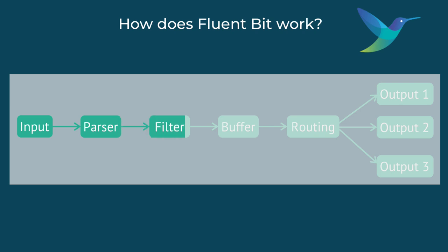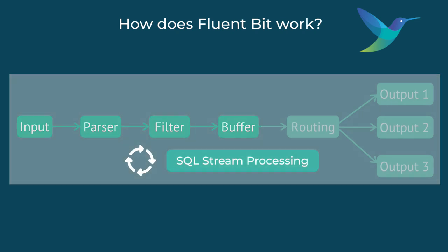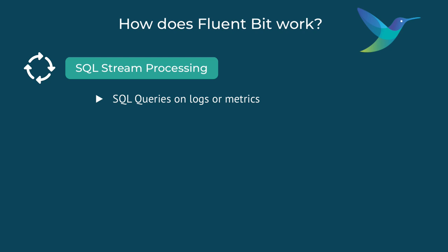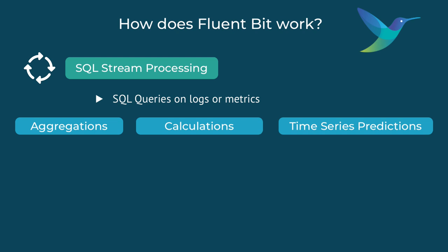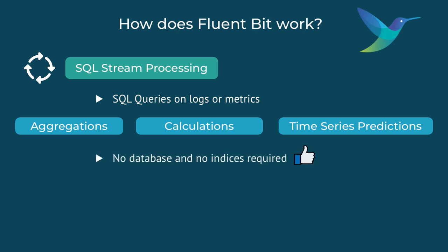In addition to all of this, one unique advanced feature that FluentBit has is SQL stream processing. This allows users to write SQL queries on the logs or metrics to do aggregations, calculations, and even time series predictions. This is super useful if you need to calculate an average, max, or mean before sending the data to storage, or count the number of times a message appears, or aggregate data to reduce data costs. The best part is that no database or indices are required — everything runs on the same lightweight, high performance process.